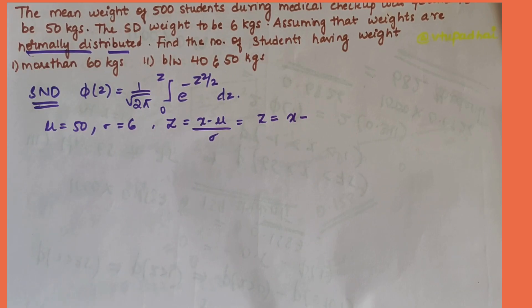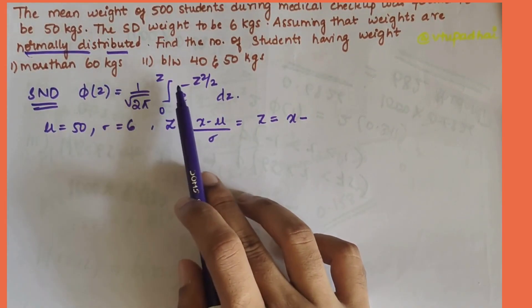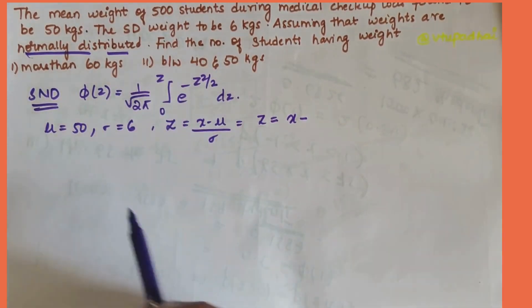The problem statement says that the mean weight of 500 students during a medical checkup was found to be 50 kgs and the standard deviation weight was found to be 6 kgs. Assuming that the weights are normally distributed, we have to find the number of students having weight of more than 60 kgs between 40 and 50 kgs.